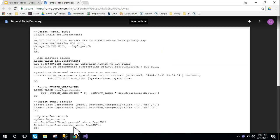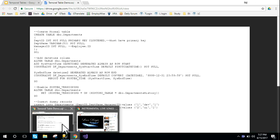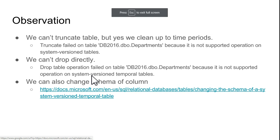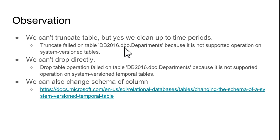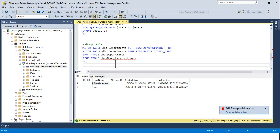Moving back to the slides - here are some basic observations. First, you can't truncate a temporal table directly; you can clean up time data using time periods. Running a simple TRUNCATE will fail because it doesn't support operations on system versioned tables. Similarly, a direct DROP query will also fail for the same reason. However, you can turn off system versioning for the table first, and then drop the data or drop the table.